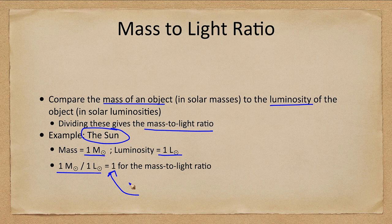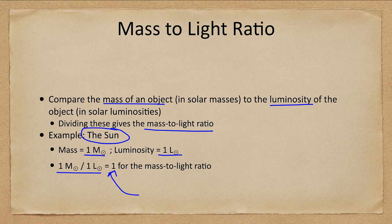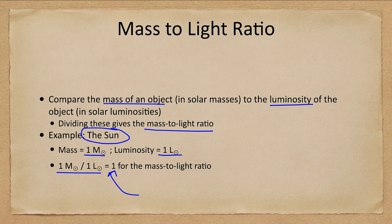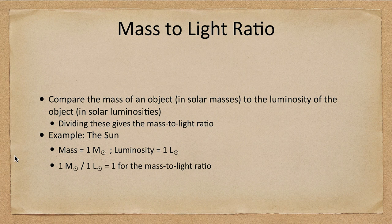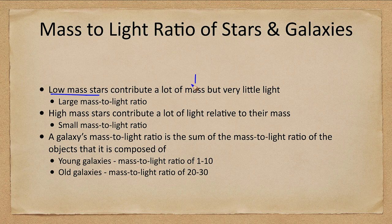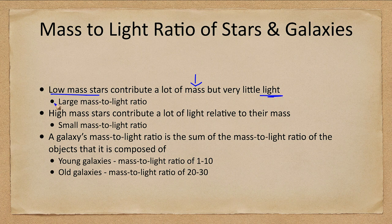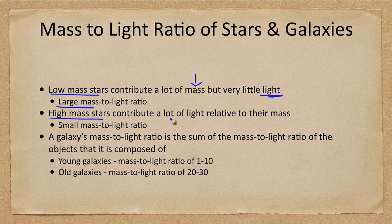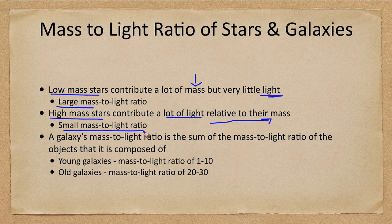Anything else would then be compared to that. Something that gives off a lot more light with less mass would have a much smaller mass to light ratio. Something that has a lot of mass and is dark would have a very high mass to light ratio. Low mass stars contribute a lot of mass but very little light. They may be low mass stars, but they give off very little light relative to their mass, so they have a large mass to light ratio. High mass stars give a lot of light relative to their mass and therefore have a small mass to light ratio.